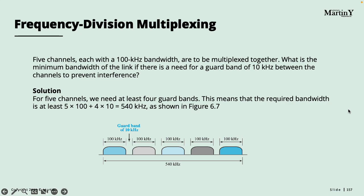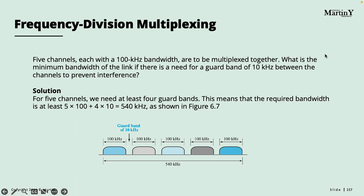Here is another example. If we have five channels, each needing 100 hertz of bandwidth, and we want to multiplex them together, the minimum bandwidth of the link we need would be at least 500 hertz for all signals. Adding 10 hertz guard bands between each of the four gaps gives us a final required bandwidth of 540 hertz.